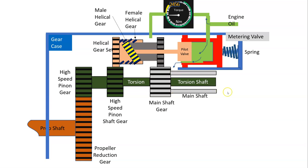The power shaft comes from the power turbine; this is the torsion shaft, which goes on to the reduction gearbox, and this is the propeller shaft. As the engine is turning, this shaft is turning and this shaft is turning. Both of these gears are turning at the same rate as they are on the same shaft.